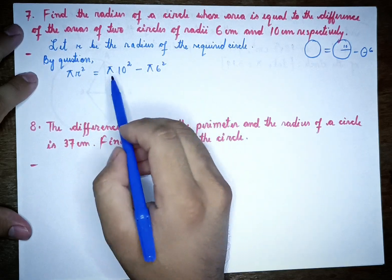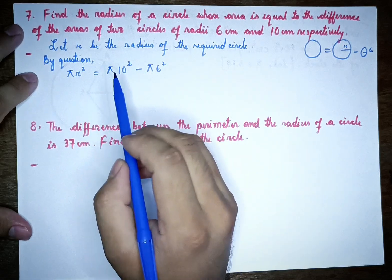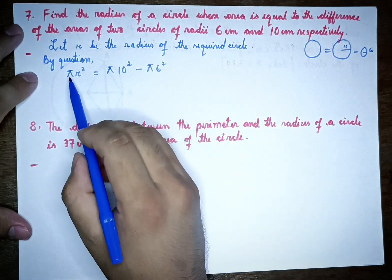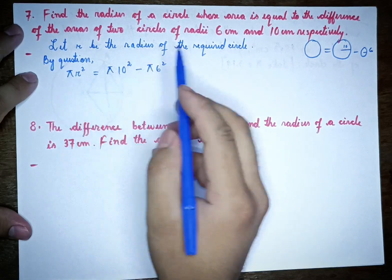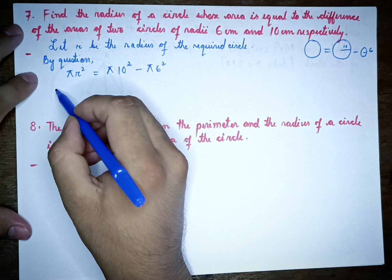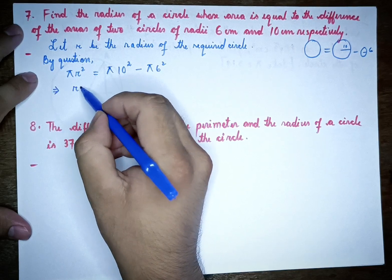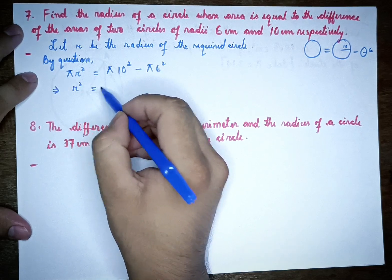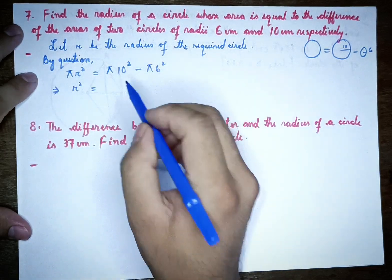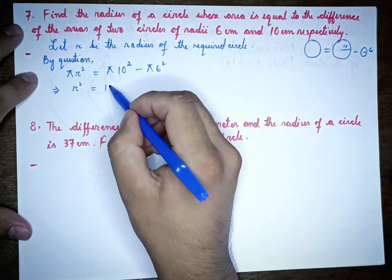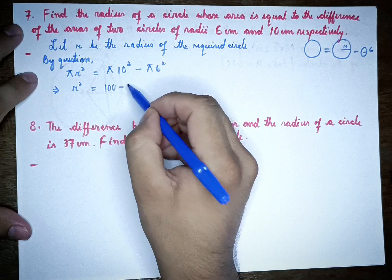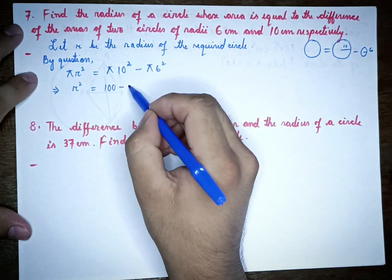We can write pi r squared equals pi times 10 squared minus pi times 6 squared. So pi r squared equals 10 squared minus 6 squared, which gives us 100 minus 36.